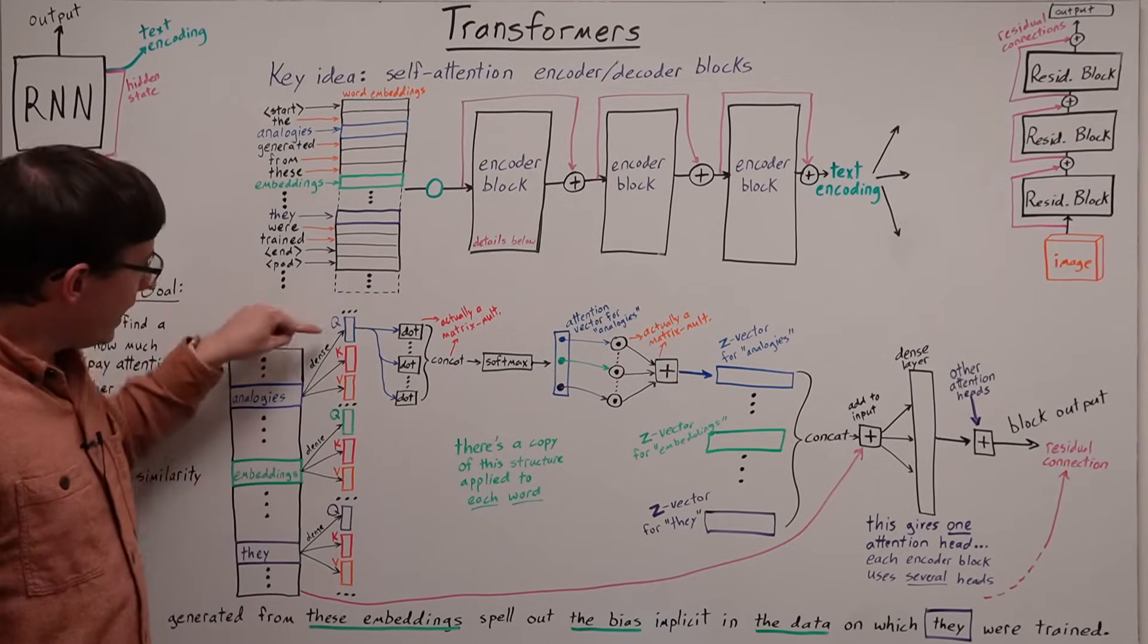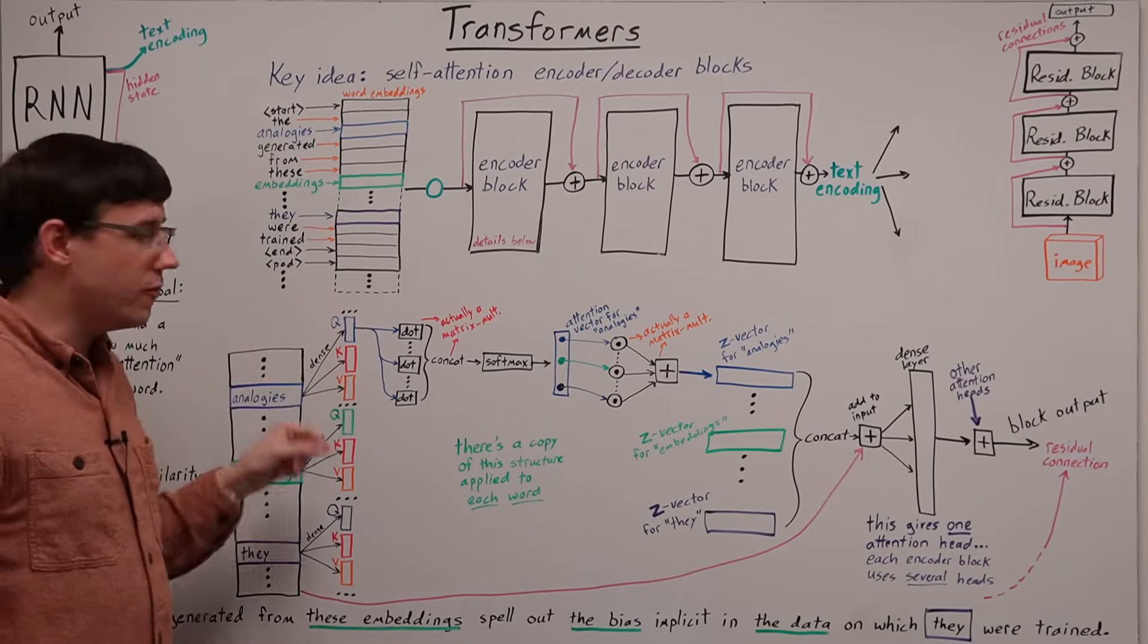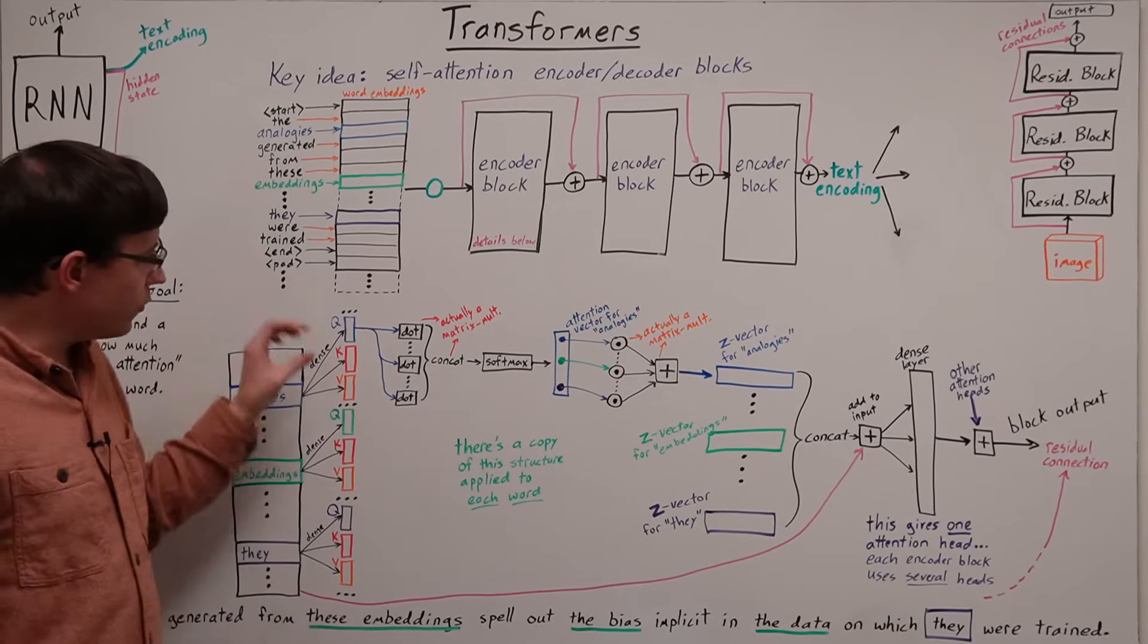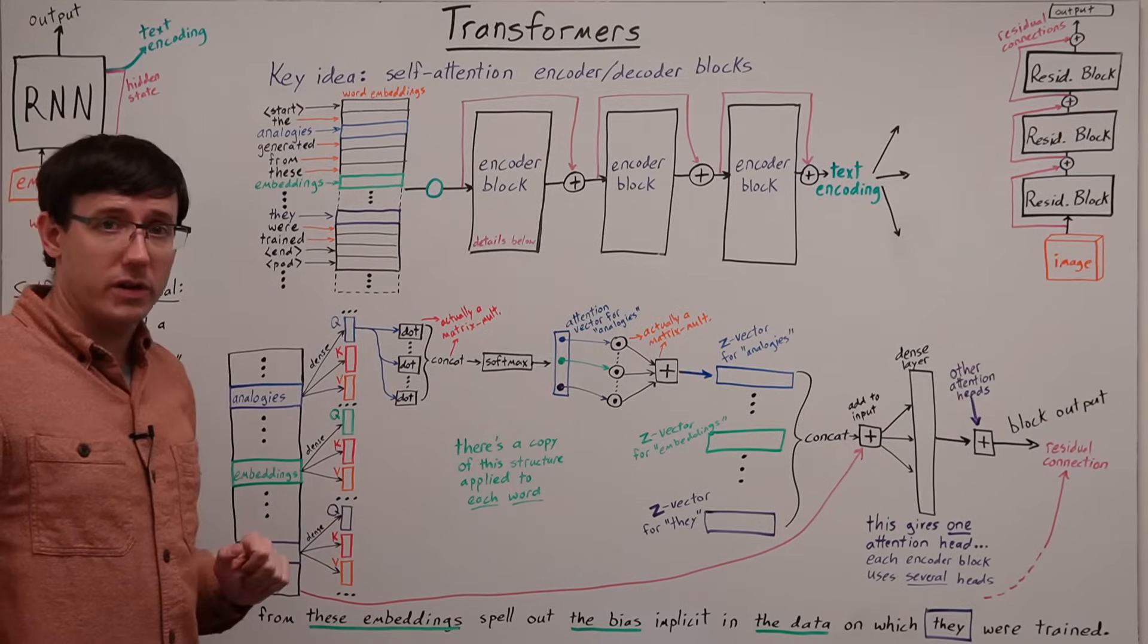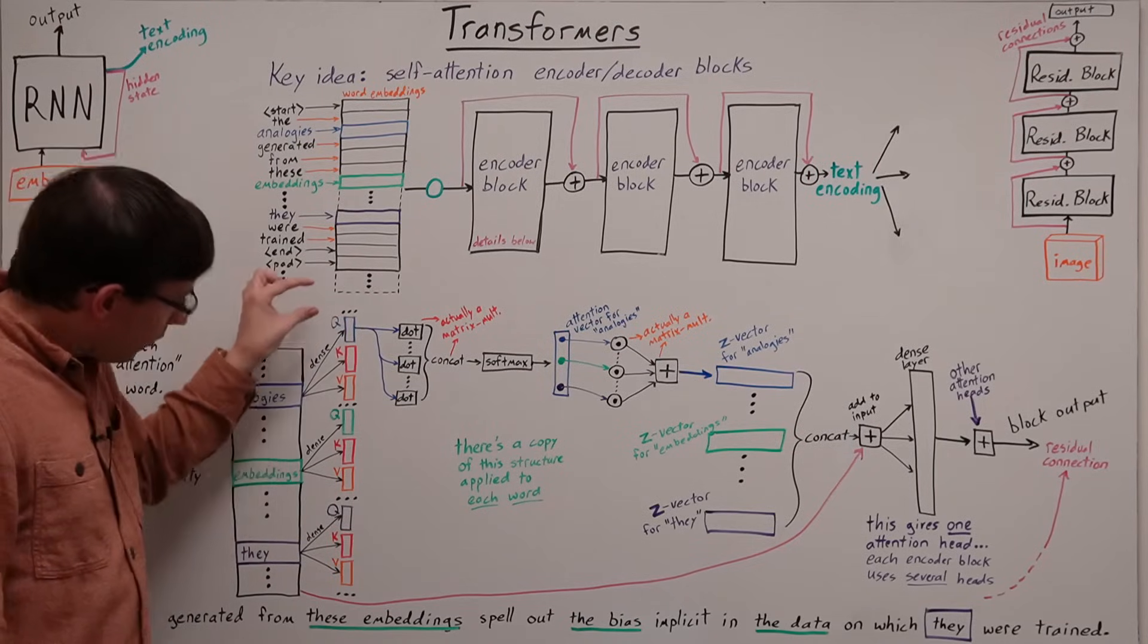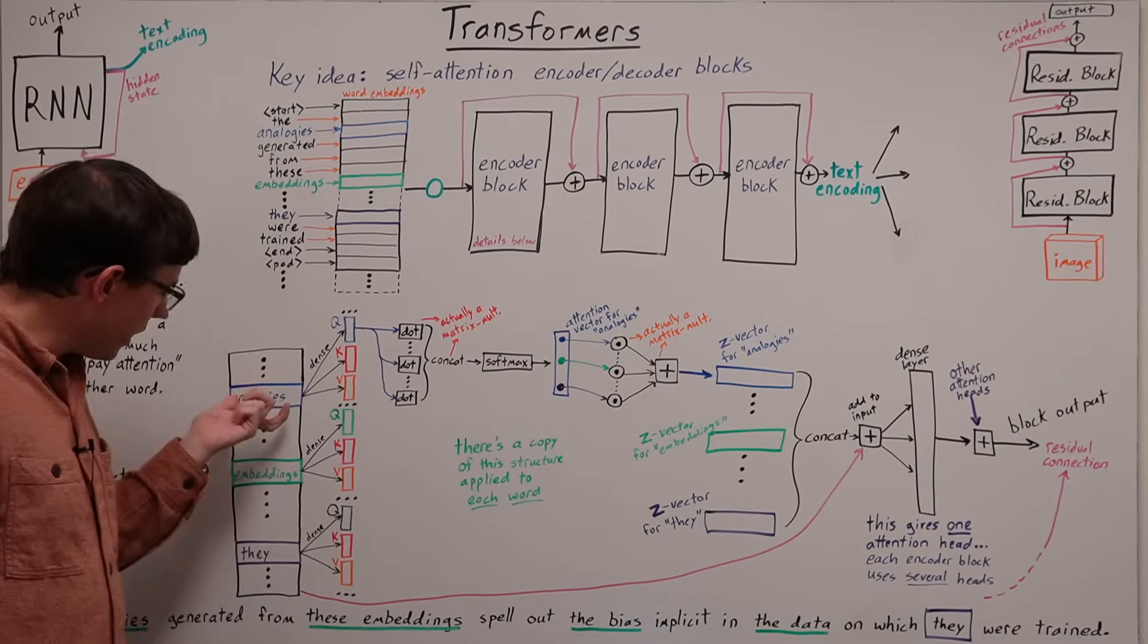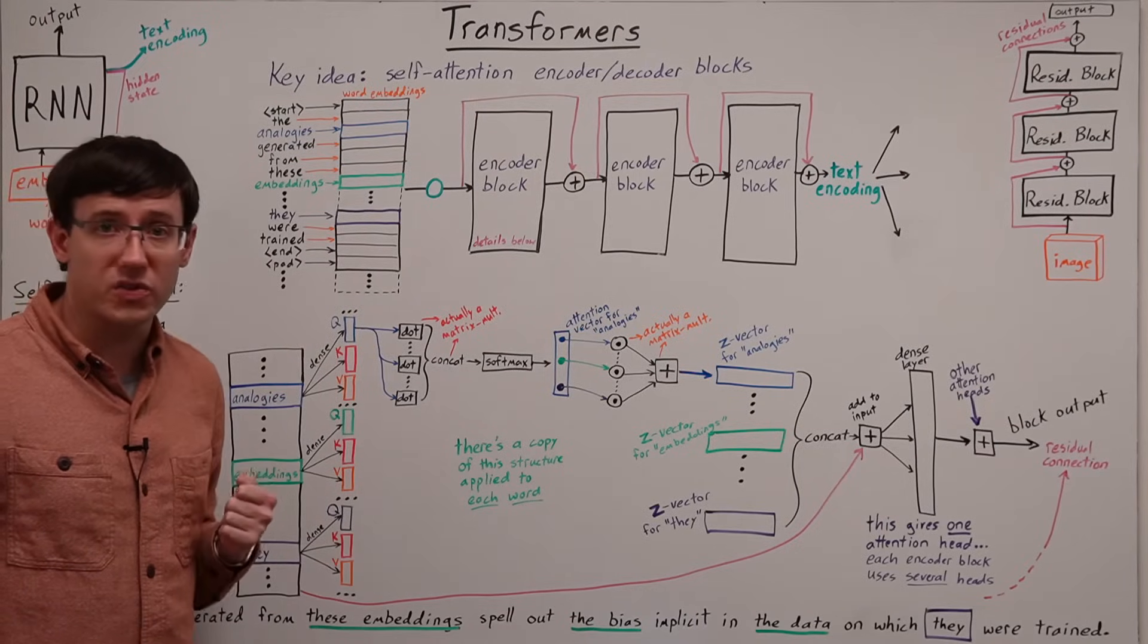Those dense layers are called Q, K, and V for query, key, and value, and we have the same set of three dense layers being applied to every word in the document. Like with convolution, all of the query layers for every single word share the same weights. They are just being applied to different elements of the input sentence.